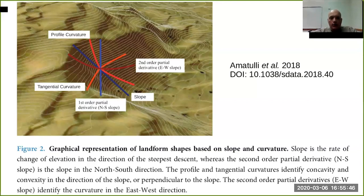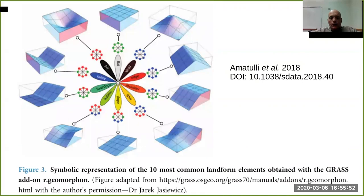In the moment that you combine all these different profile curvature, tangential curvature, first-order derivatives, and so on, you can identify different kinds of geomorphological forms. For example, flat and peak, ridge and shoulder, spur and slope. This figure immediately lets you understand that we can identify peaks and ridges in a very immediate way.